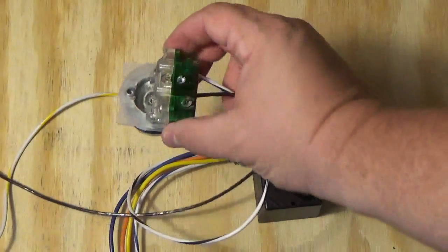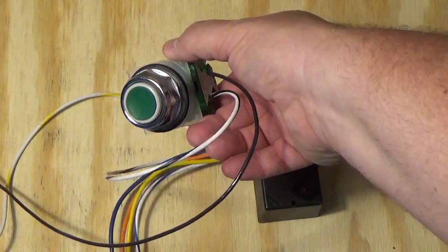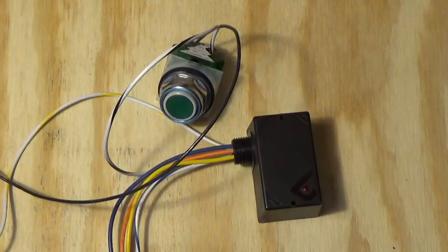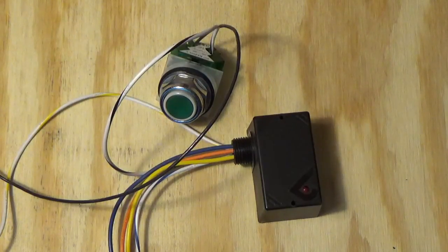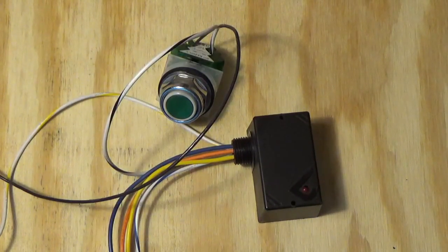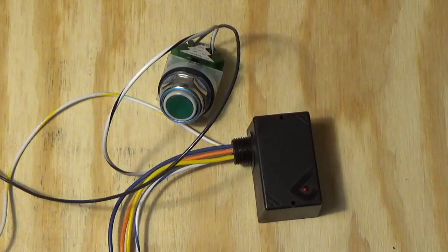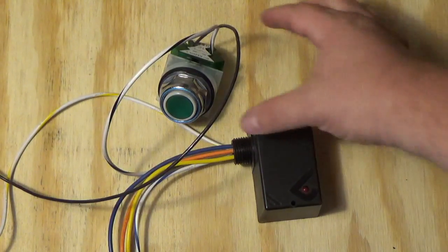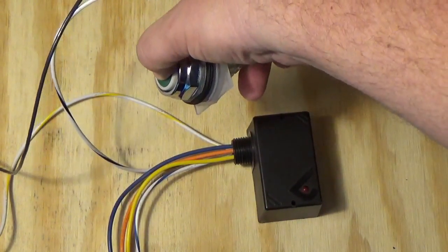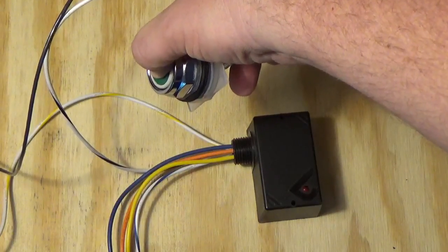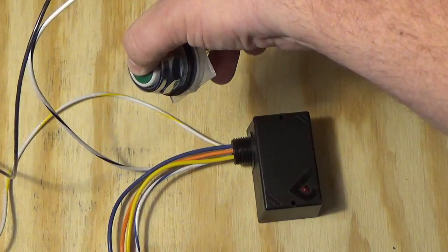Now we have the normally open connected to the relay. Let's add power and see what happens. Unlike the last one, the light didn't come on. If I take and press my button, my red light should come on. When I take my finger off, it's off.